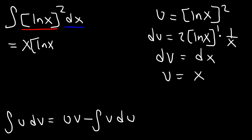u is ln x squared, and then minus the integral of v, which is x, times du. That's 2 ln x times 1 over x. So we can cancel x.